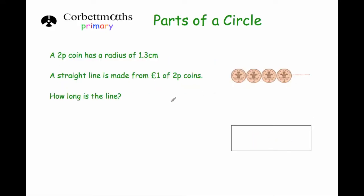Okay, and lastly, we're going to have a go to reasoning question now. So here we've got our 2p coin. And it says the radius of a 2p coin is 1.3 centimeters. And the question says a straight line is made up of one pound of 2p coins. How long is the line?